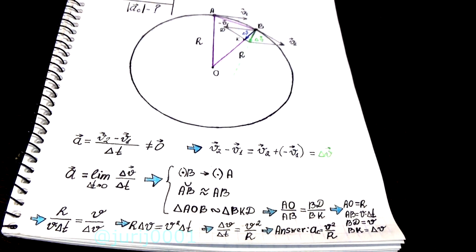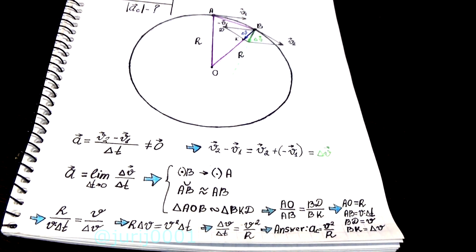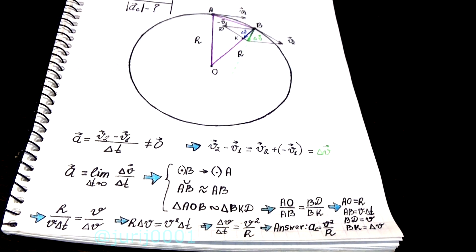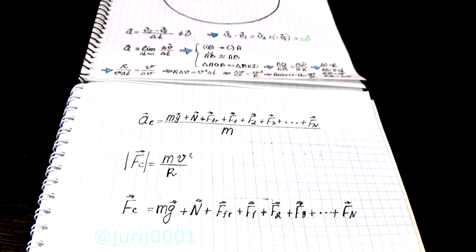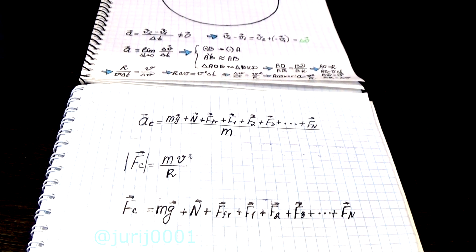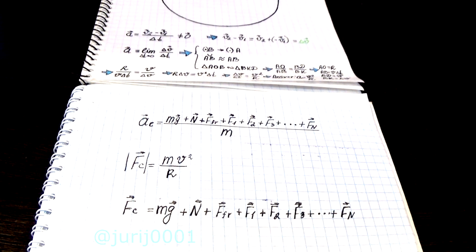So, my friends, we got the formula for centripetal acceleration. If you want to get the formula for centripetal force, you have to multiply the resulting acceleration value by the mass. When solving problems, you should take into account the fact that the centripetal force or acceleration is the result of other forces.